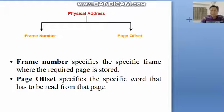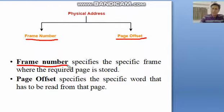So the physical address has two parts, which are the frame number and the page offset. The frame number is the specific frame where the required page is stored, and the page offset specifies which word inside the frame you need. So this is the physical and logical address.